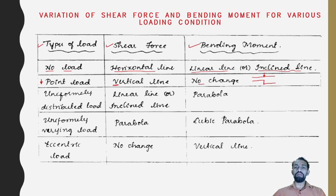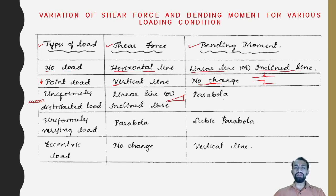For a point load, the bending moment shows no maximum change. When it is a UDL — uniformly distributed load — there will be a linear or inclined line for the shear force diagram, and a parabolic curve will appear for the bending moment.